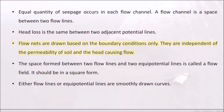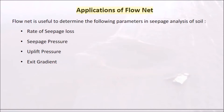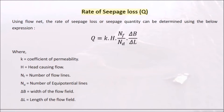The space formed between two flow lines and two equipotential lines is called a flow field; it should be in square form. Either flow lines or equipotential lines are smoothly drawn curves. Flow net is useful to determine the following parameters in seepage analysis: rate of seepage loss, seepage pressure, uplift pressure, and exit gradient.